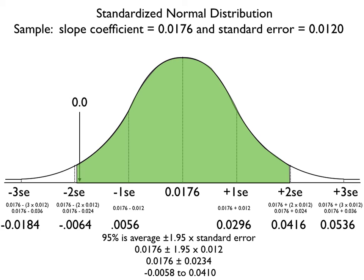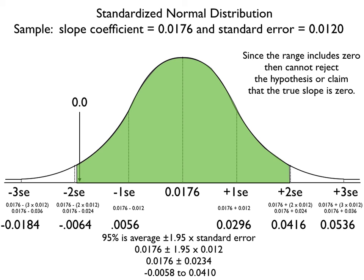The key question is: where is zero? Zero actually falls within that 95% confidence interval. If that's the case, then we cannot reject the hypothesis or the claim that the true slope is actually 0.0. So even though our regression equation tells us the slope is 0.0176, once we consider the standard error of that estimate, zero is included in that range. Therefore, there could be no relationship between the independent and the dependent variables.